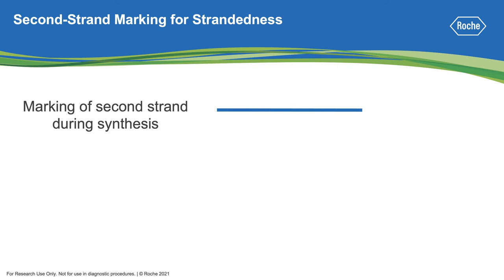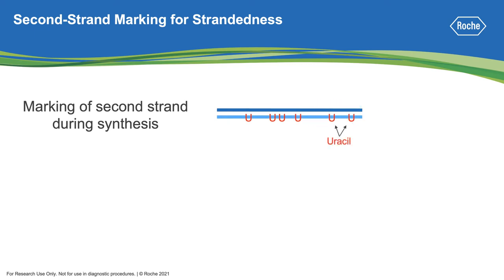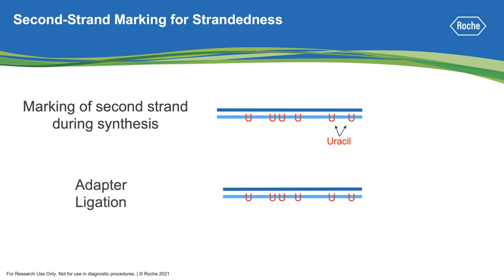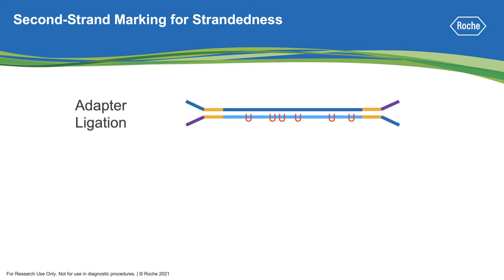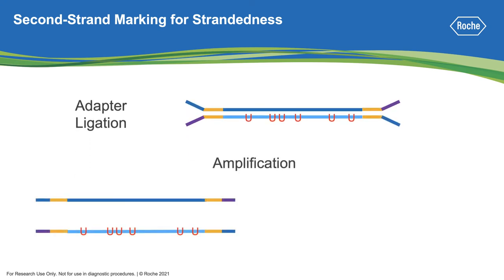The difference with a stranded RNA sequencing library kit is that during second strand synthesis, the strand will be marked — this can include a strategy of incorporating uracil bases into the strand. With the new double-stranded cDNA, the workflow continues into the standard sequencing library preparation step of adapter ligation. After adapter ligation, amplification is used to increase the amount of sample for sequencing.